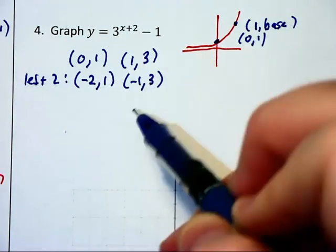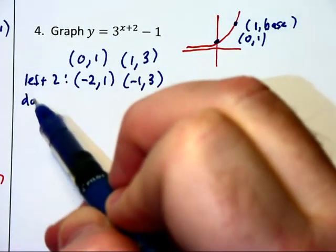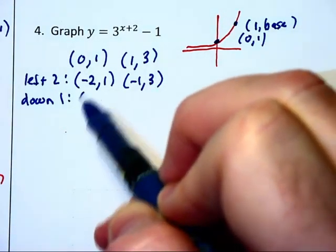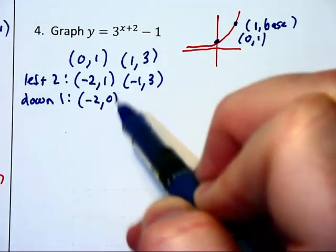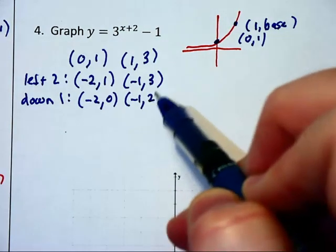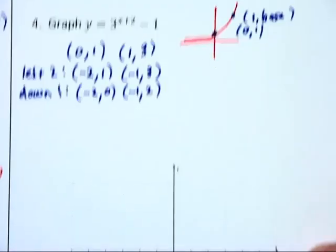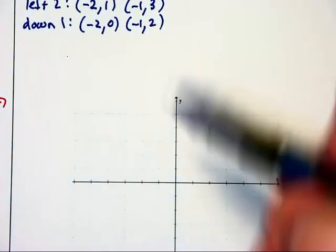Then that minus 1 at the end tells us we're going to move the graph down 1. That gives us (-2,0) and (-1,2).